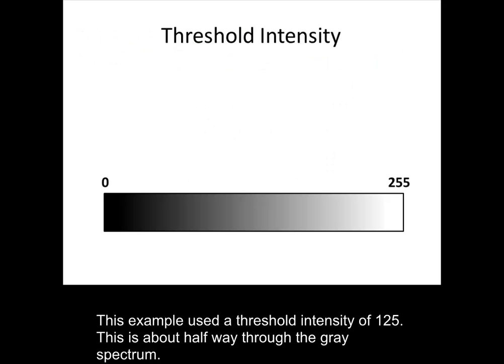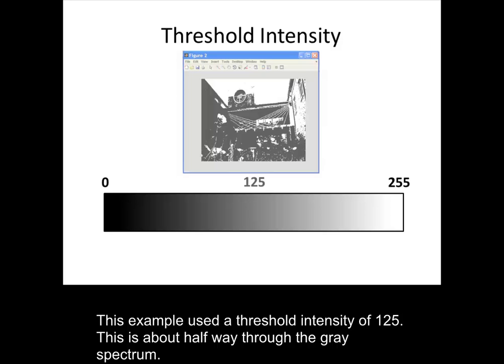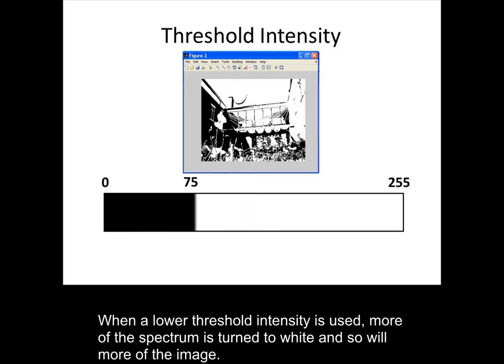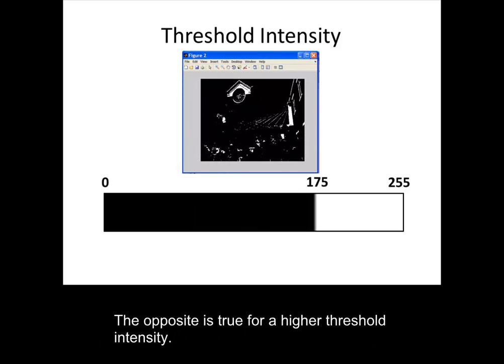This example used a threshold intensity of 125. This is about halfway through the gray spectrum, which causes half the intensities to be black and the other half to be white. When a lower threshold intensity is used, more of the spectrum is turned to white and so will more of the image. The opposite is true for a higher threshold intensity.